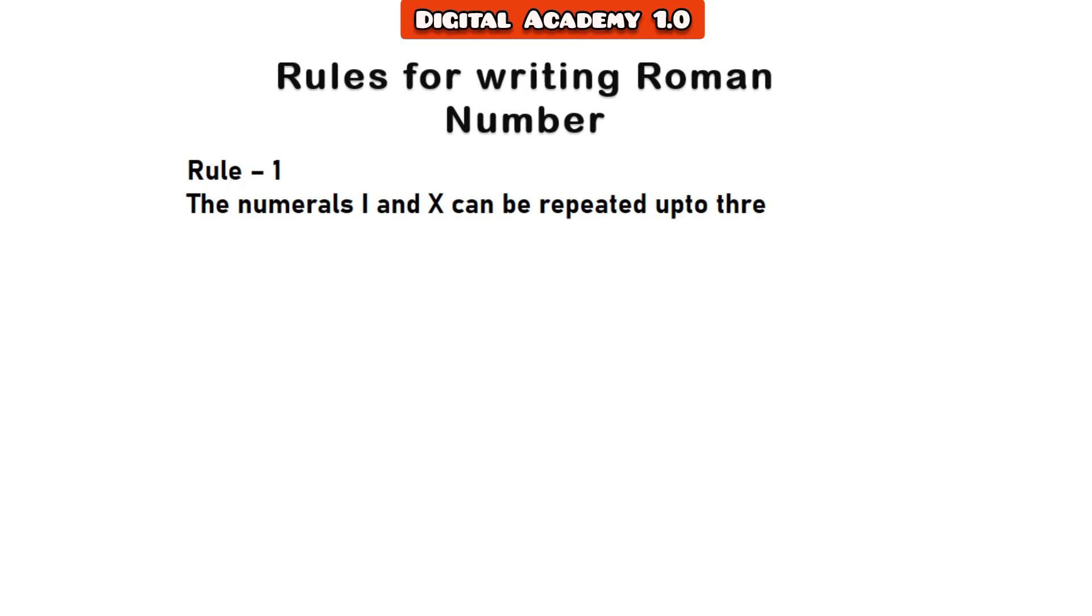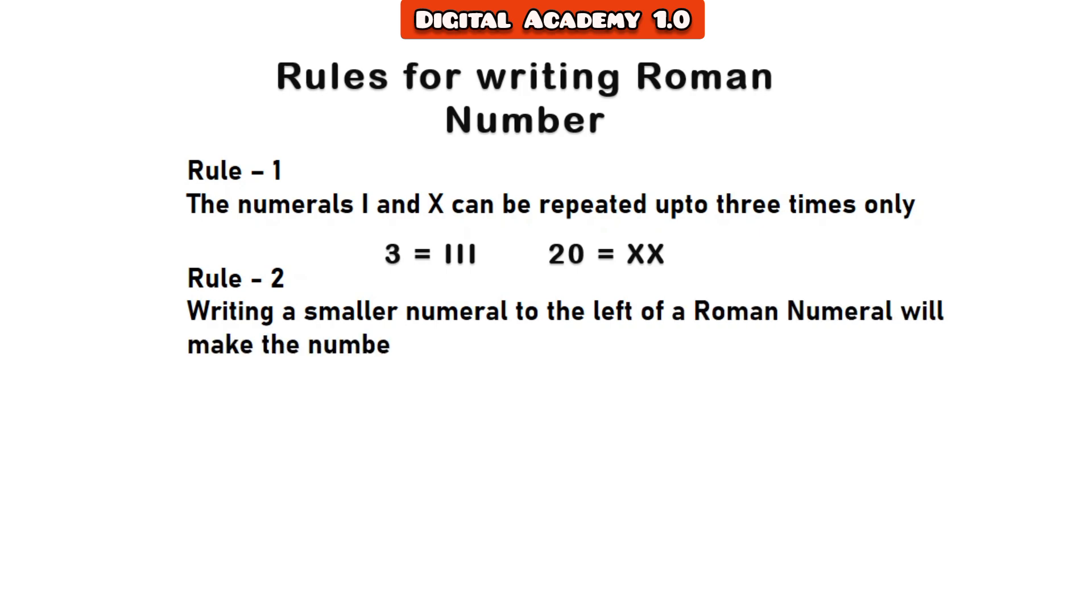Rule two: writing smaller numerals to the left of a Roman numeral will make the number smaller than actual value. For example, IV for 4, IX for 9, XL for 40, XC for 90.